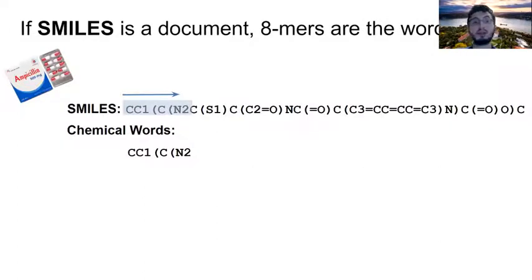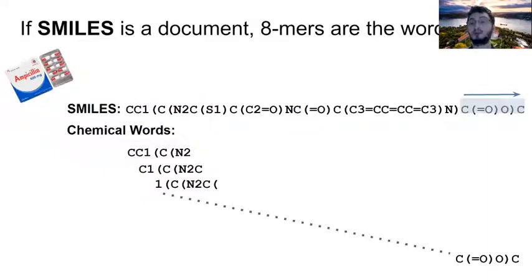To find the words of a ligand or a SMILES string, we use 8-mer approach. In the 8-mer approach, we extract the list of all 8-character subsequences of a SMILES string. For instance, we extract the first 8-character of the SMILES string and then slide the window 1 right and extract the next 8-character sequence. We continue until we reach the end of the SMILES string. And when we reach the end, then we obtain a list of chemical words that we can use to represent the document or ligand.